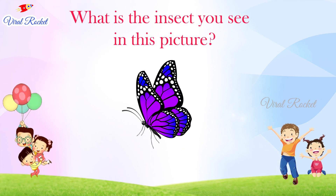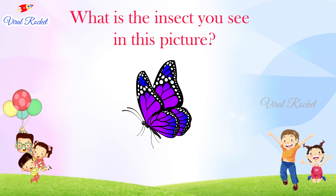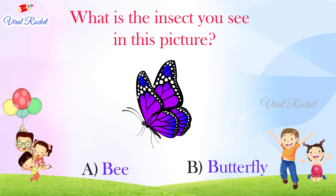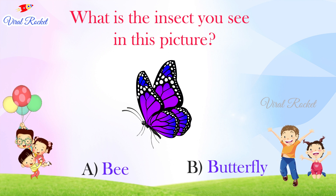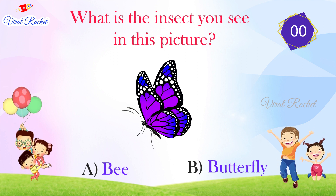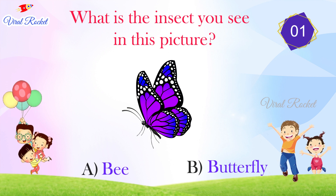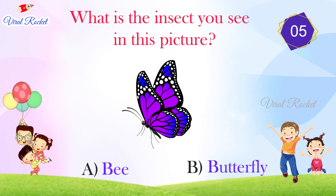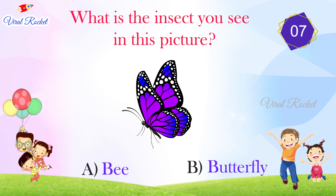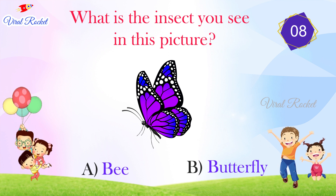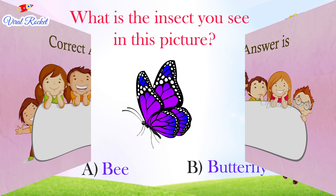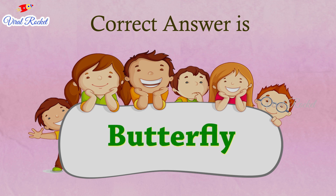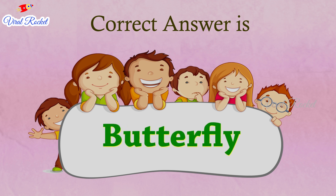What is the insect you see in this picture? The options are: A. Bee, B. Butterfly. The correct answer is B. Butterfly.